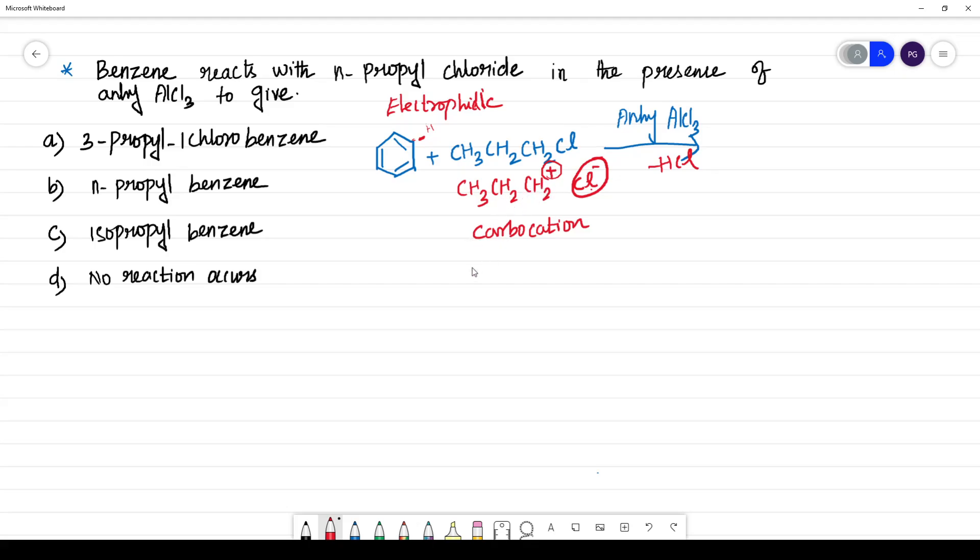What carbocation here? See, this is CH3, CH2, and I'm writing it as CH3, CH and H, and this is CH and H plus. So this is a primary carbocation.